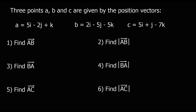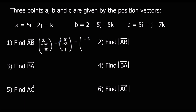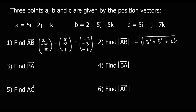Pause the video, give it a go, and then press play when you're ready to go through the answers. A to b — that'd be b take away a. So (2, minus 5, minus 5) take away (5, minus 2, 1). So: 2 minus 5 is negative 3; negative 5 take away negative 2 is negative 3; and negative 5 take away 1 is negative 6. Mod a to b: Pythagoras gives us the square root of 3 squared plus 3 squared plus 6 squared, which is 3 root 6.